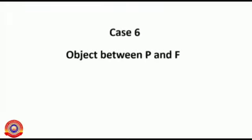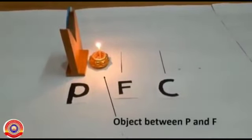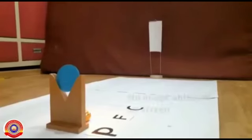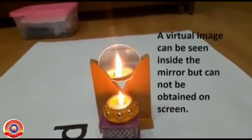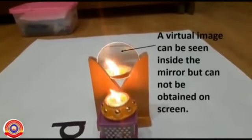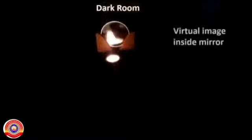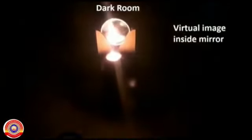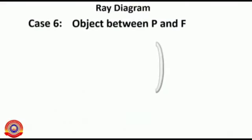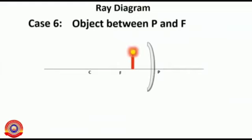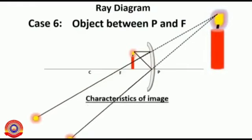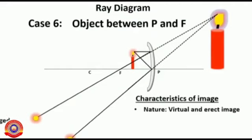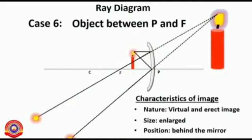Next, the object is placed between F and P. If the object is placed between F and P, the image is formed beyond the mirror. The image formed is virtual, erect, and magnified.